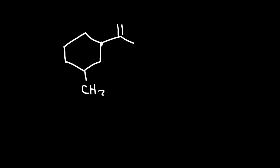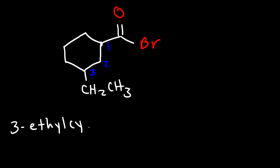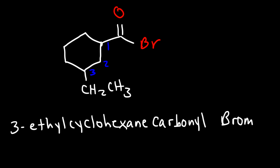This time we're going to have an ethyl substituent attached to a cyclohexane ring with an acid bromide. The acid bromide has priority, so this is carbon one, which means the ethyl group is on carbon three. This is going to be called 3-ethylcyclohexane carbonyl bromide. And now you know how to name acid halides — 3-ethylcyclohexane carbonyl bromide.